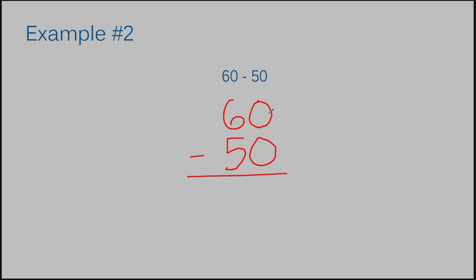Now, if I have zero and I take zero away from it, how many do I have? I still have zero. So that's easy. If I have six and I take five away from it, how many do I have? One. So my answer to example number two is 10.